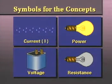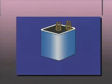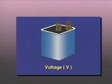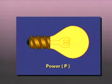The other three letter symbols are easy to remember because they are simply the first letter of the word itself. For voltage, the letter symbol is V. For resistance, the letter symbol is R. And for power, the letter symbol is P.